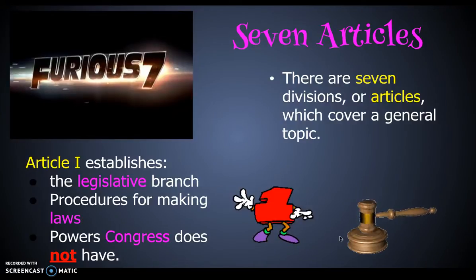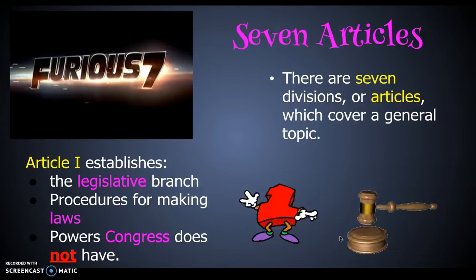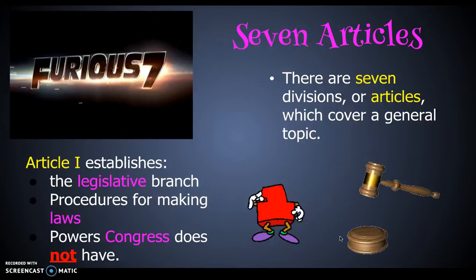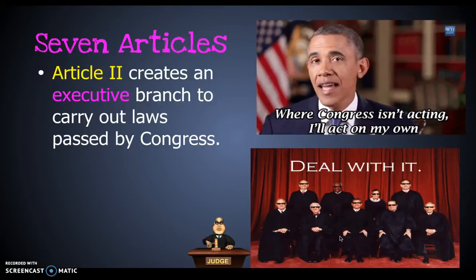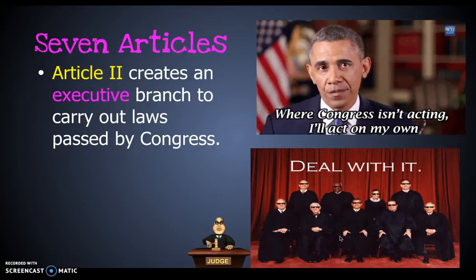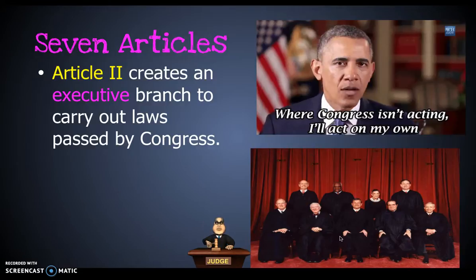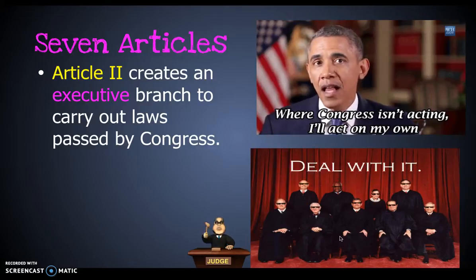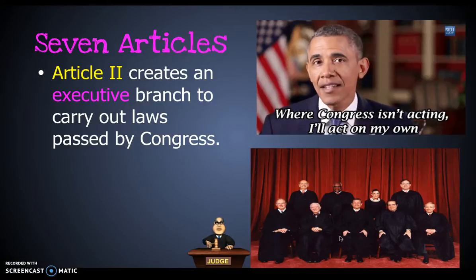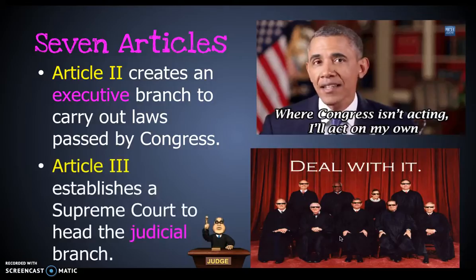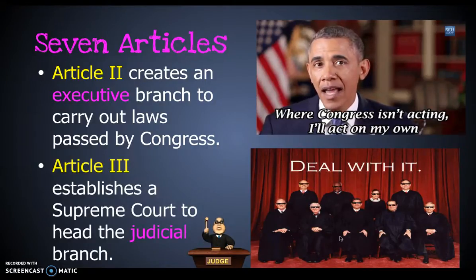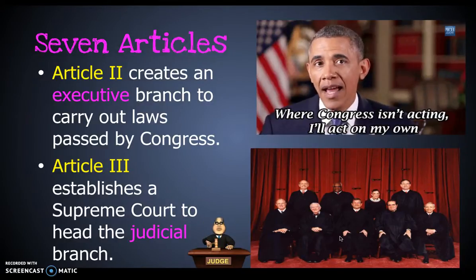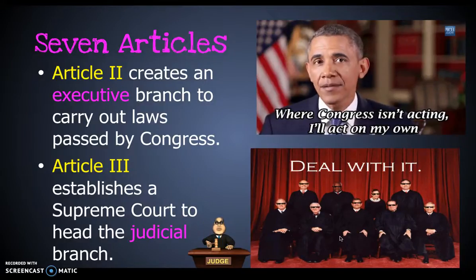Each branch is responsible for its own particular tasks and has its own powers and checks on others. Article 2 defines the executive branch — the idea of a president leading the country was a new creation. That president is tasked with executing or carrying out the laws passed by Congress. Article 3 establishes the Supreme Court, and eventually other courts below it, whose job is to interpret the law.